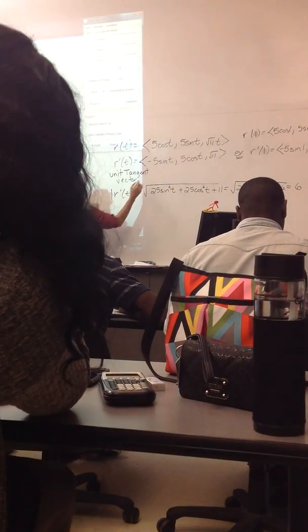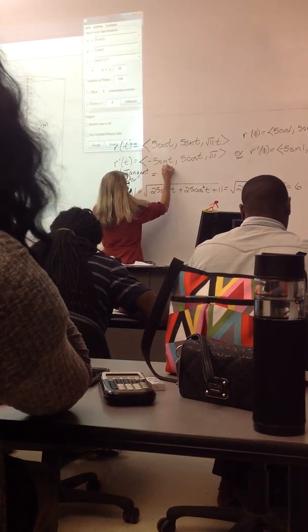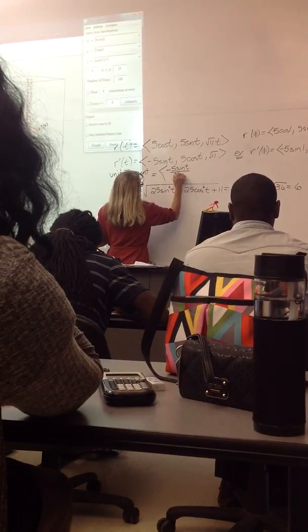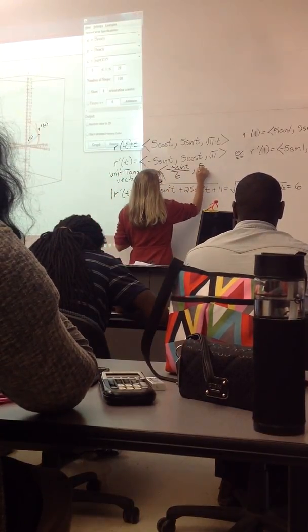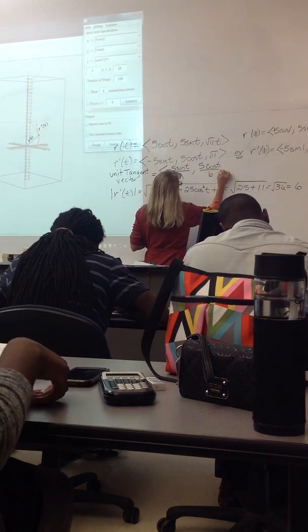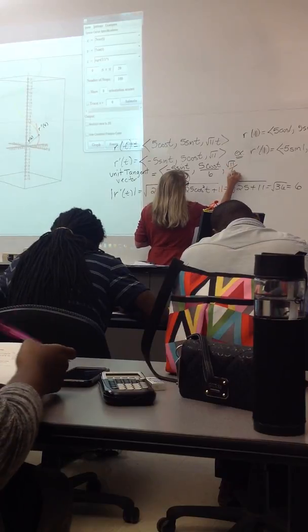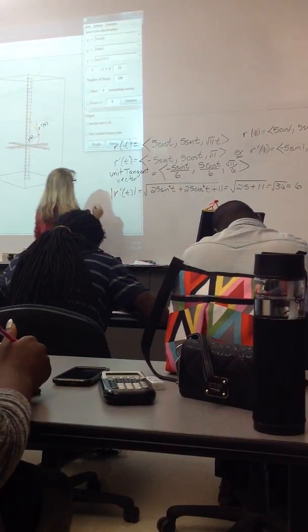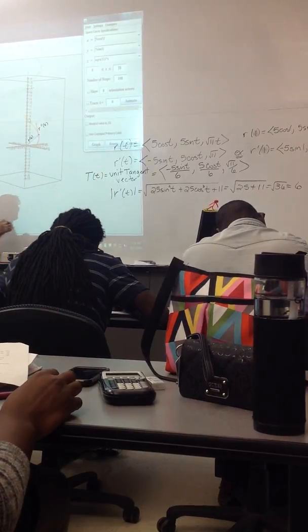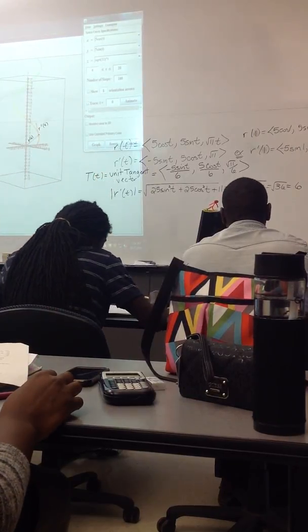So my unit tangent vector is the tangent vector divided by the length. So negative 5 sine of t divided by 6, 5 cosine of t divided by 6, square root of 11 divided by 6. That's the unit tangent vector. And the books use T to represent that.